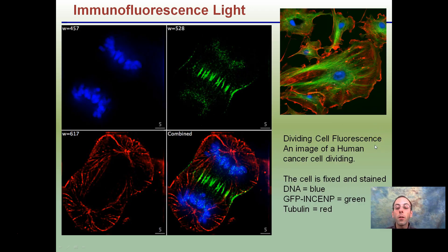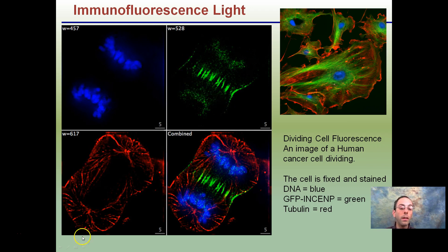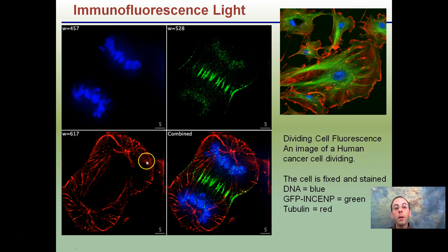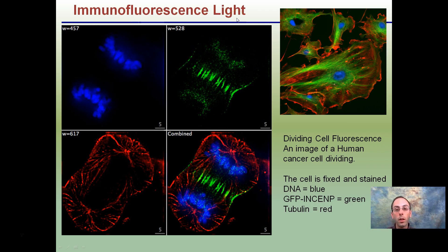Because antibodies are extremely specific, we can label them to look at different things. In this first image we're identifying a particular DNA structure shown in blue. Here we're using green to identify a different structure, and red to identify another. When we add each antibody individually, we just get the blue, the green, or the red. But when we combine all those antibodies, we're able to see a better picture of the cell — where specifically different components are located. That's the power of the immunofluorescence light microscope.